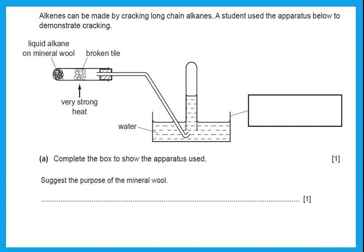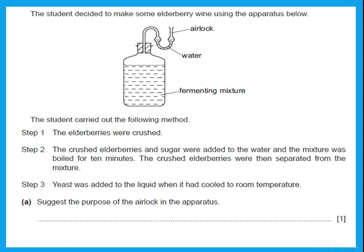Alkenes can be made by cracking long-chain alkanes. The wide beaker containing water can be labelled as a beaker, but it is actually called a trough. The mineral wool is in a horizontal tube — the mineral wool holds the liquid alkane.